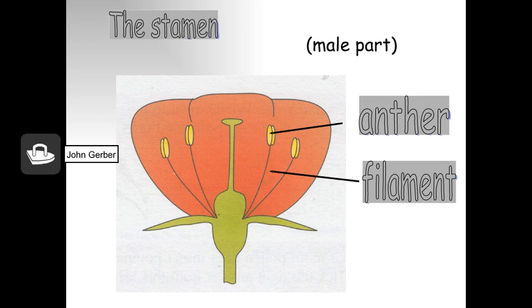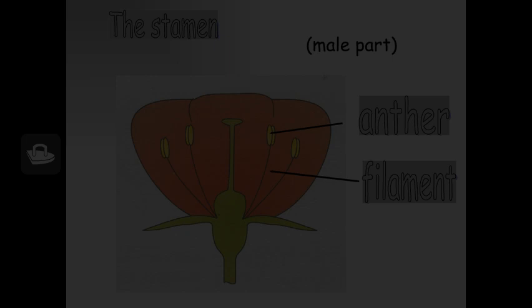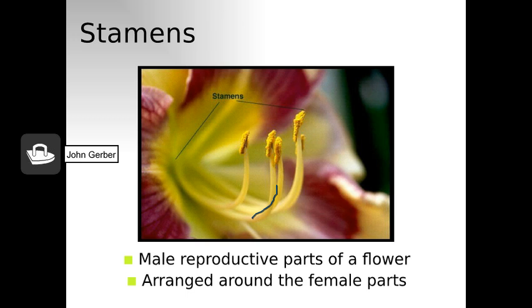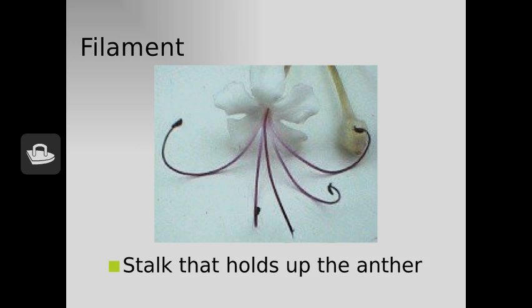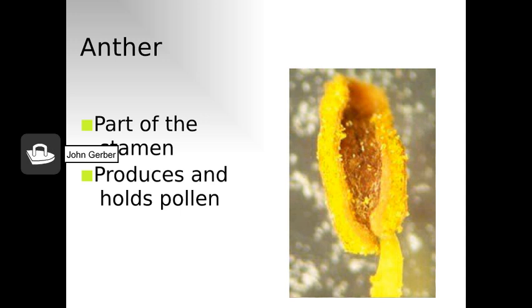The stamen is the male reproductive organ. It consists of a pollen sac — the anther — and a long filament supporting the pollen sac. The filament holds the anther in position, making the pollen available for dispersal by the wind, insects, or birds. This anther contains lots of tiny pollen grains, and some filaments can be quite beautiful.